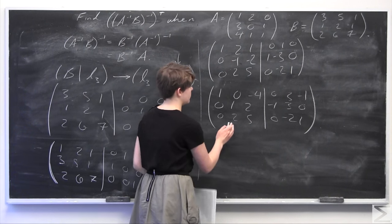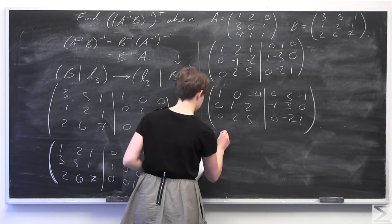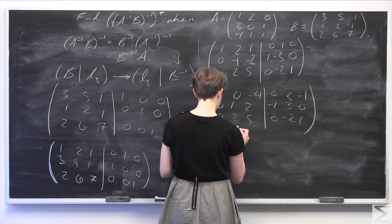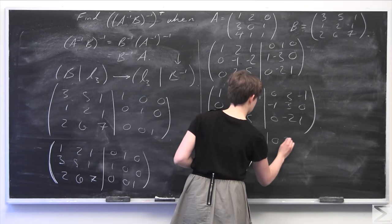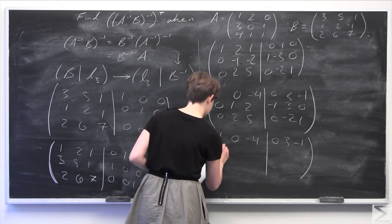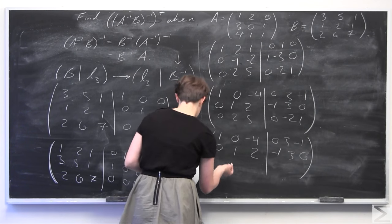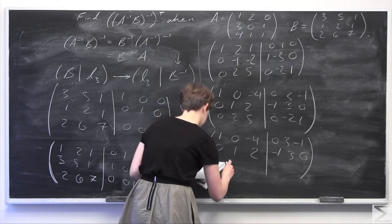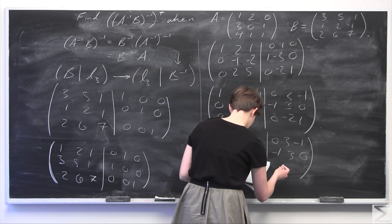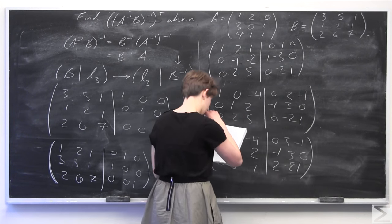Now I'm going to subtract two times the second row from the third row in order to clear the 2 and get a leading one in that column by itself. The top two rows stay the same. The third row becomes 0, 0, -1 | 2, -8, 1. We are performing only elementary row operations throughout, so everything is valid.